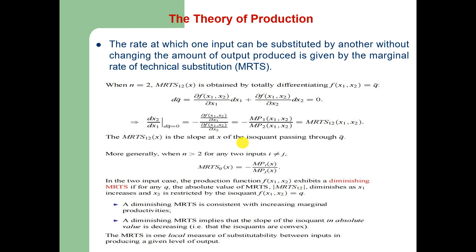A diminishing marginal rate of technical substitution shows that the slope of the isoquant in absolute terms is decreasing — that is, the isoquants are convex to the origin, just like indifference curves which are convex to the origin. Since the MRTS in absolute terms is going to decrease, it shows that isoquants are convex to the origin or concave from above.